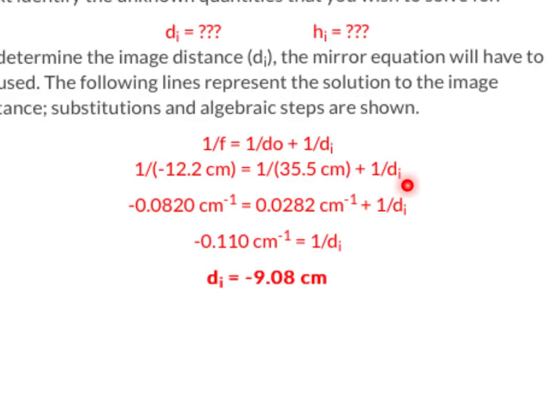Next, I could combine this and this by subtracting. I'll get negative 0.11. And then to solve for di, you're just going to cross multiply and divide. Your answer will be negative 9 centimeters.